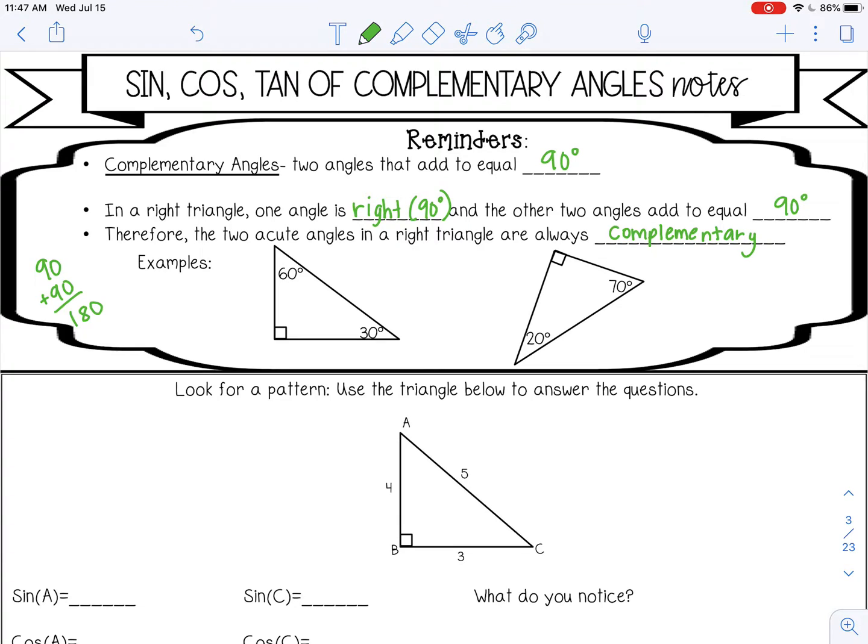And I have some examples here. So 60 and 30. 60 plus 30 is 90. And then 20 and 70. Those also add to 90.